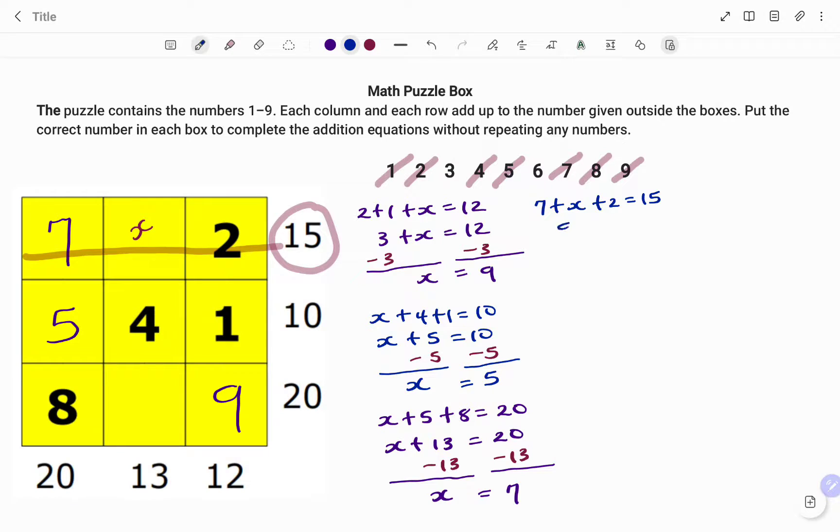I have 9 plus x, as 7 plus 2 is 9, equals 15. Using the balance method, I take out 9 from both sides. I'm left with 0 plus x, that's x equals 15 minus 9, that's 6. So my missing variable for the first row is 6.